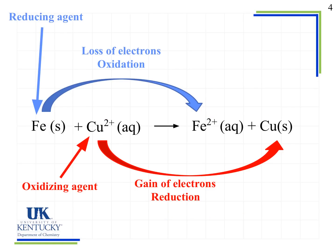Now we need to look at two more terms: reducing agent and oxidizing agent. These terms indicate who is causing either reduction or oxidation to happen. The species that is oxidized is the reducing agent. In this case, iron undergoes oxidation going from an oxidation number of zero to plus two. As a result, it is the reducing agent, because by being oxidized it causes another species to be reduced. Remember that oxidation and reduction must happen in pairs.